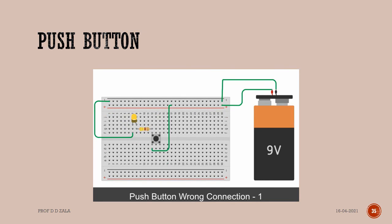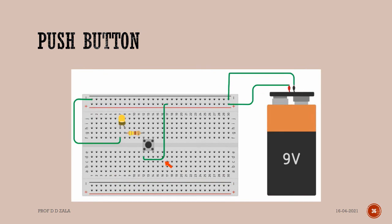Next, we will see the common mistake people make while using the push button. Look at this image. The anode of the LED is connected to the second power rail through leg A and C of the push button. Recall that legs A and C of the push button are internally connected. Hence, the anode of the LED is always connected to the second power rail. The LED always glows in this circuit, even when the push button is not pressed.